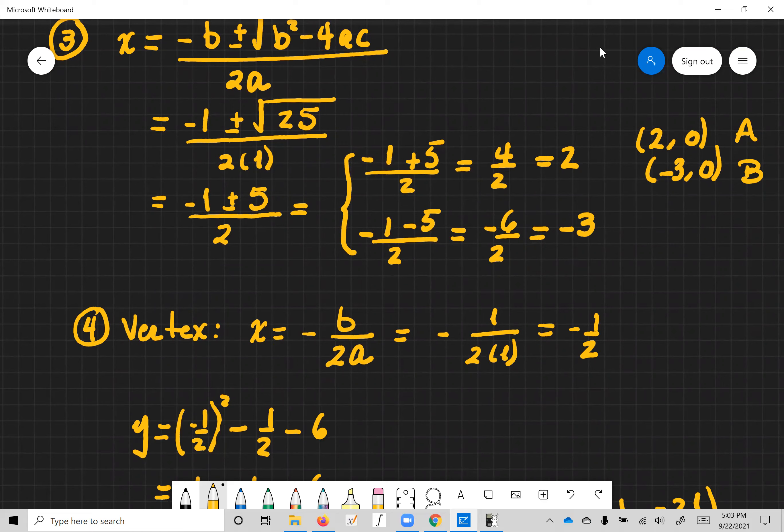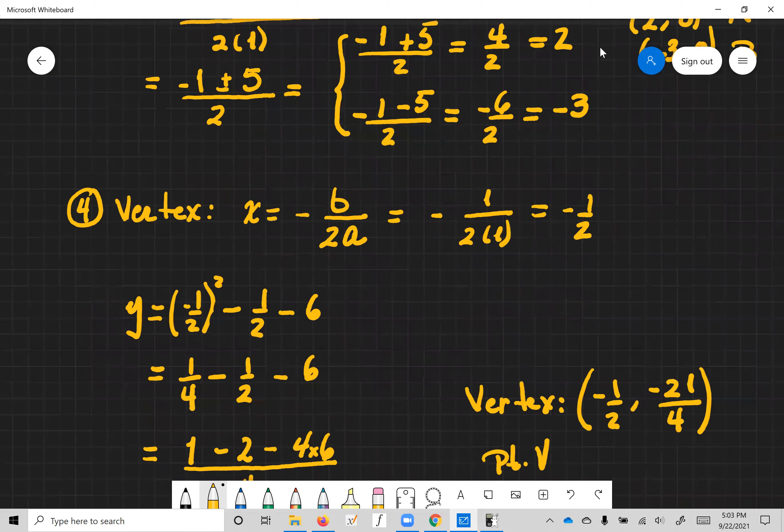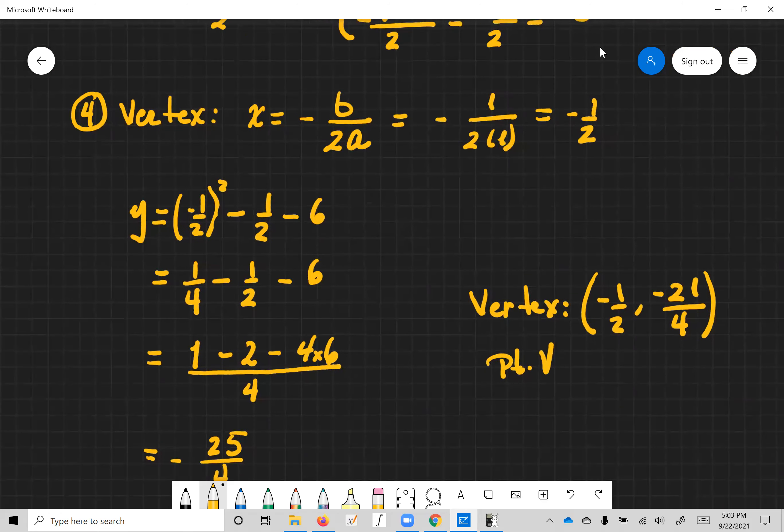Now that's the x coordinate of the vertex. The y coordinate, we plug in x into y and then we get the answer, we get the value for y. So we plug x in here: negative a half squared minus a half minus six.